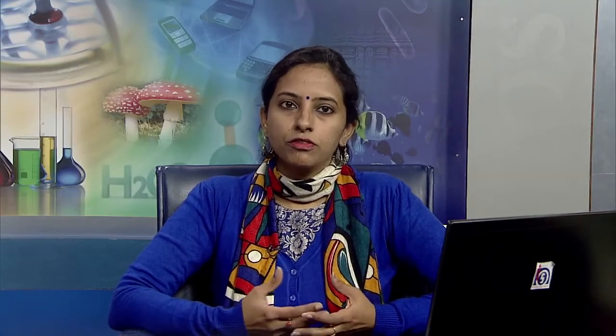Let us first talk about the nature of insurance. When we talk about insurance, we have three schools of thought. The first school of thought says that insurance is a transfer device. What do we mean by transfer device? It means that the insurance is transferred from the insured to the insurer, or the risk is transferred from the insured to the insurer.